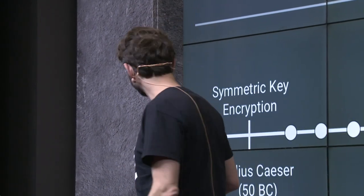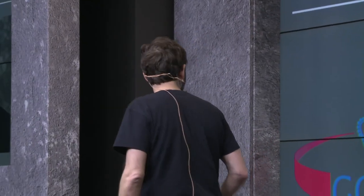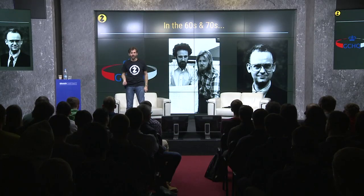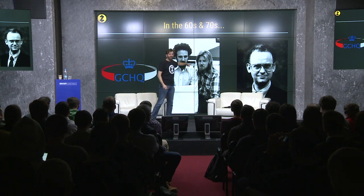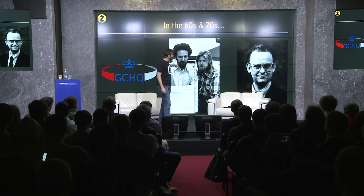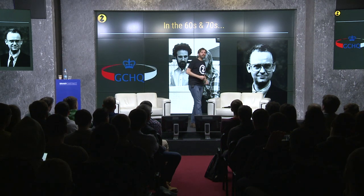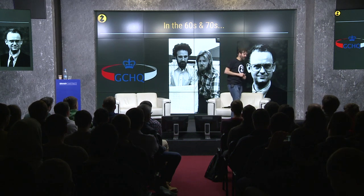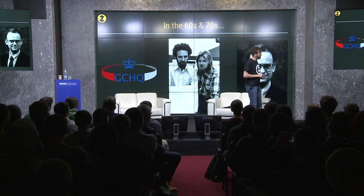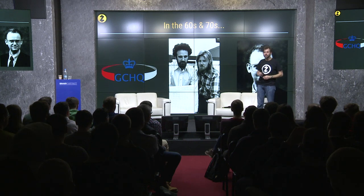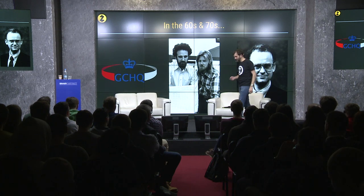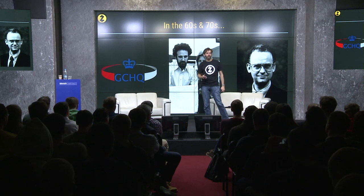Symmetric cryptography was the only kind that anyone knew about for 2,000 years, until the 1960s and 1970s. This is Whitfield Diffie, Martin Hellman, and Ralph Merkle, and in the 1970s these people came up with a new concept — a new direction in cryptography called public key cryptography.